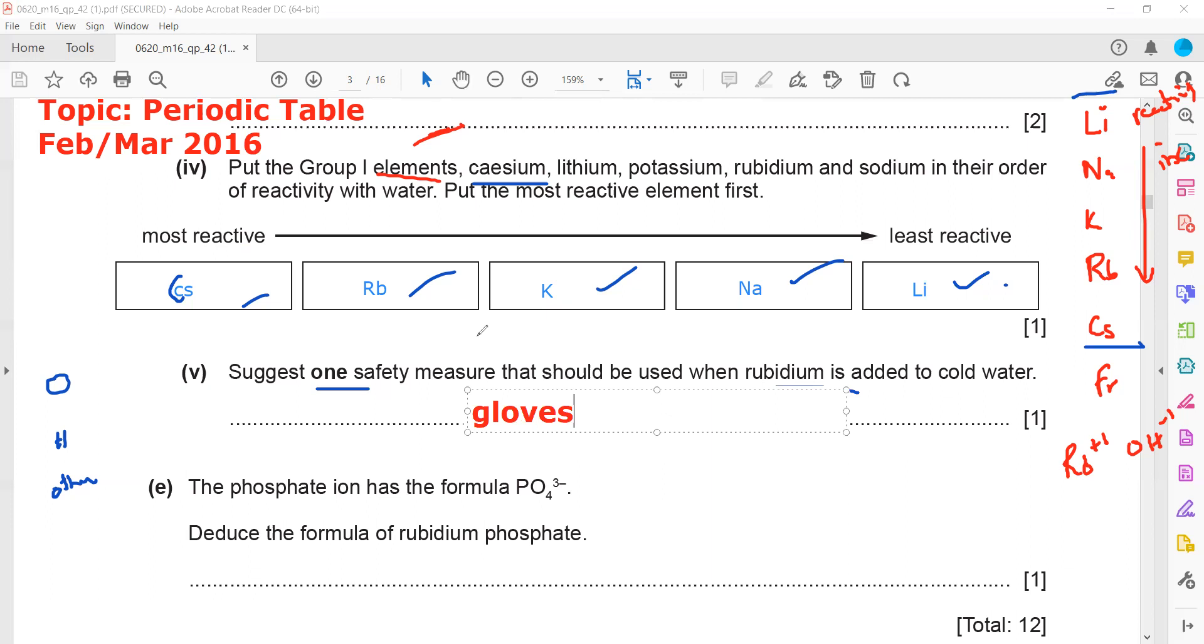Then phosphate ion, which has the formula PO4 with a charge 3 minus, deduce the formula of rubidium phosphate. What will the formula of rubidium phosphate be if rubidium is plus 1 and phosphate PO4 has charge minus 3? Use the screen annotation to complete this. So rubidium phosphate will be Rb3PO4.